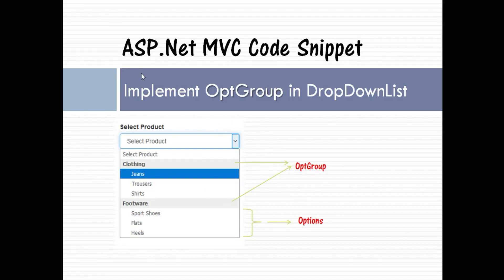Hello friends, welcome to the video tutorial of ASP.NET MVC code snippet. In this video we are going to study how to implement option group or optgroup in a drop down list. We are going to take the help of the drop down list helper in MVC. As you can see in this picture, clothing and footwear are the groups, whereas jeans, trousers, shirts, sports shoes, flats, and sales are the options.